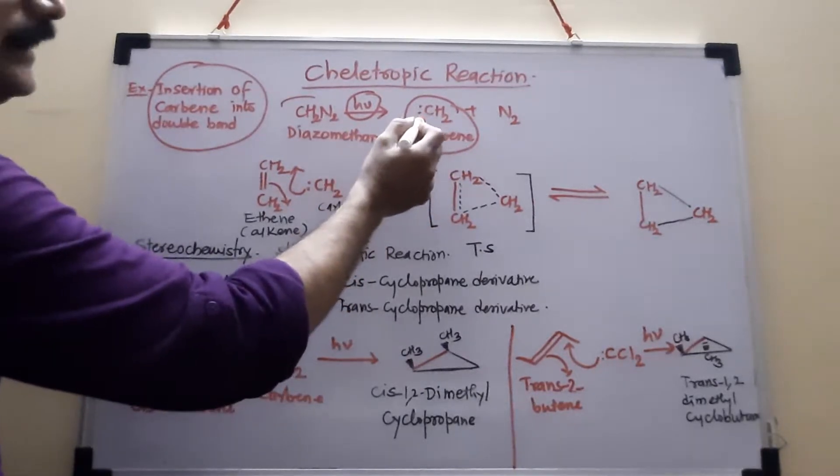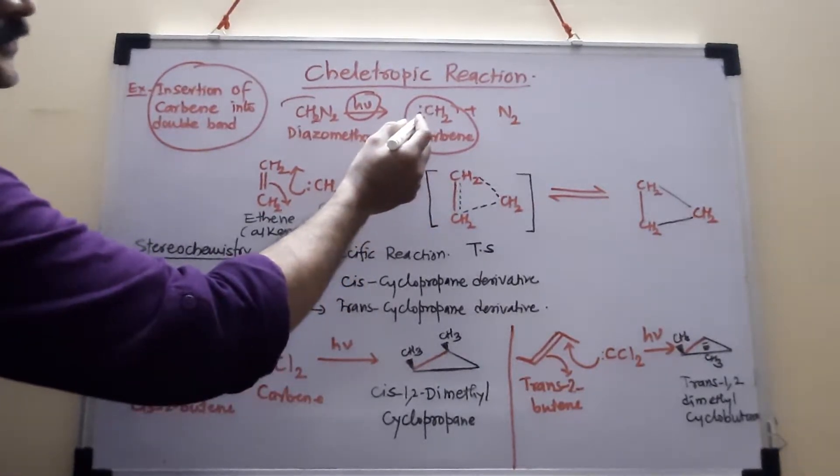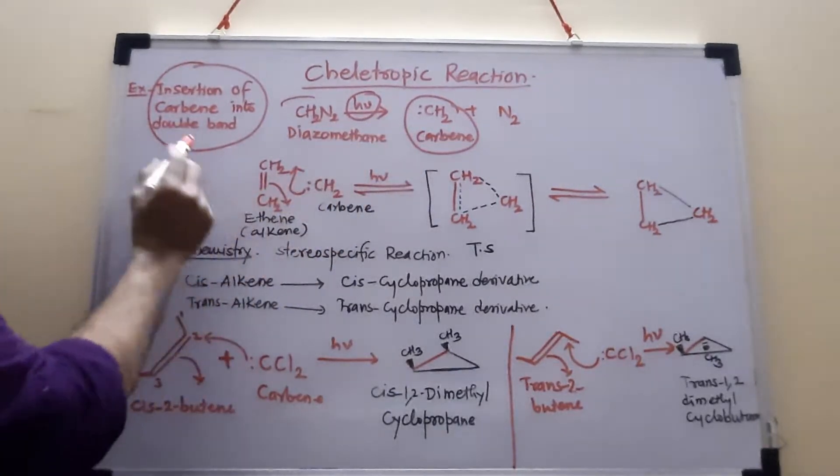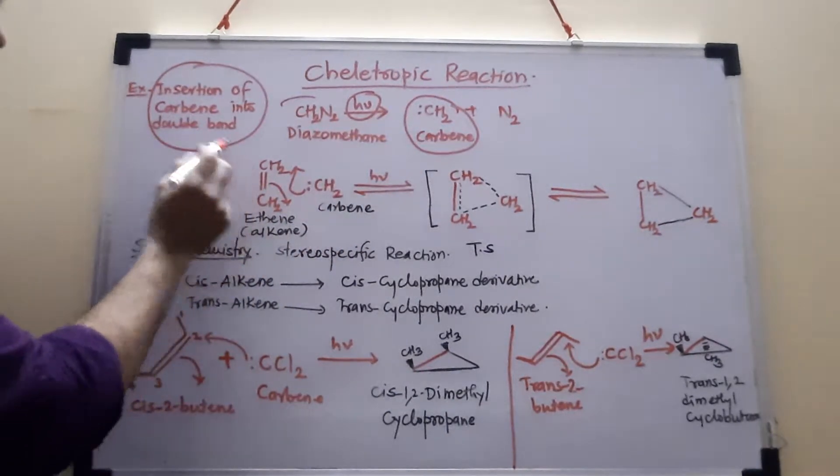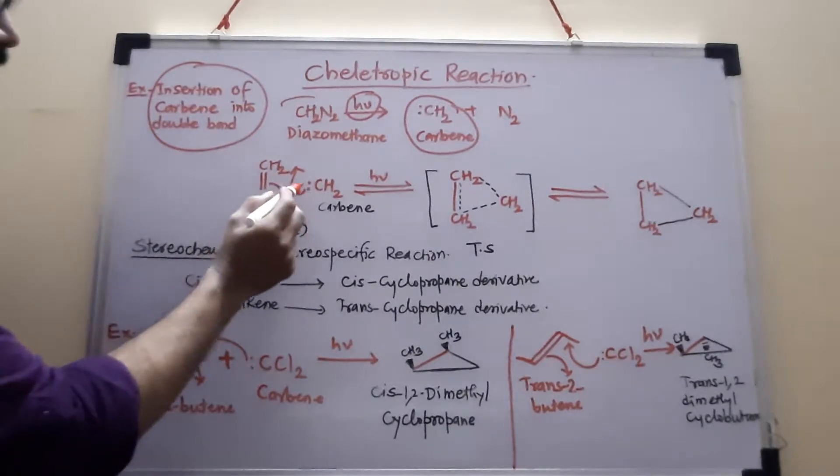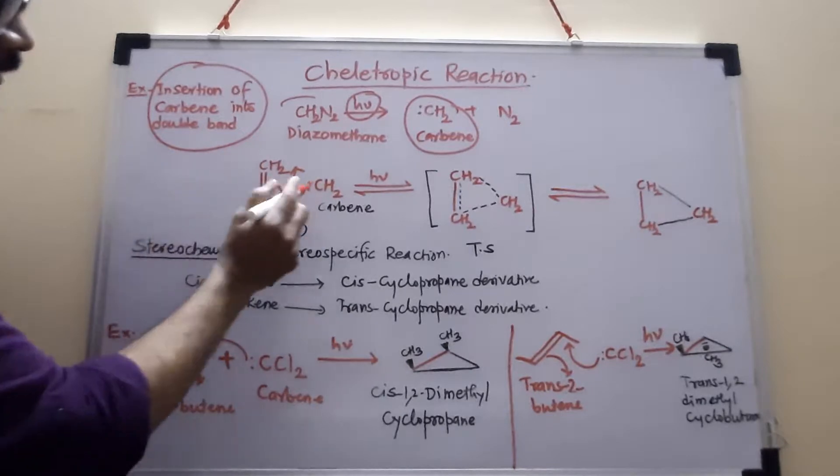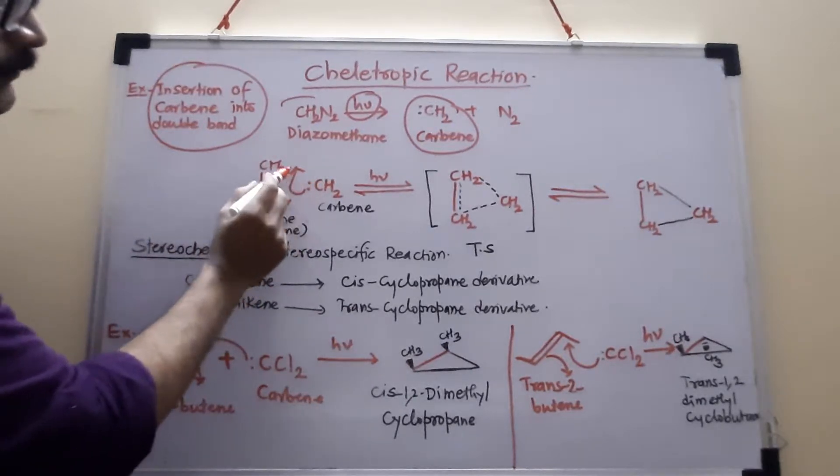And this carbene is highly reactive, very reactive. So this carbene is now reacting with the double bond of the molecule like this. In fact, it is inserted on this double bond. So actually two sigma bonds are formed.